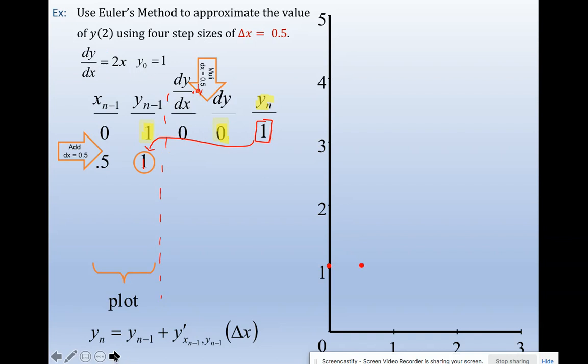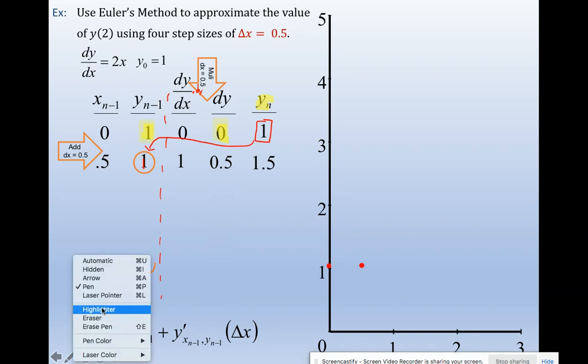Lather rinse repeat. This is your new fact. It's really fiction. Go to your slope generator and plug in the point 0.5, 1. This slope only depends upon x so you're only taking 2 and multiplying by 0.5 and I get 1. Multiply 1 times my change in x. Take your old y, add your change in y, come up with your new y.